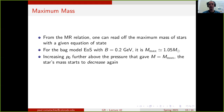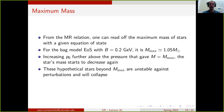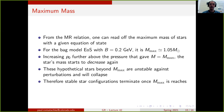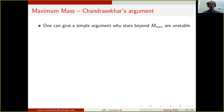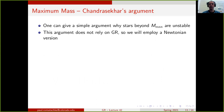If one increases p₀ above the value that gives the maximum mass, the star's mass starts to decrease again. However, these hypothetical stars — where the mass decreases below M_max — are actually unstable against perturbations and will collapse, as will be argued in the following slides. The stable star configurations terminate once the maximum mass is reached. The argument why the branch beyond M_max is unstable follows a general energy argument that doesn't rely on general relativity, so we'll use a Newtonian version.